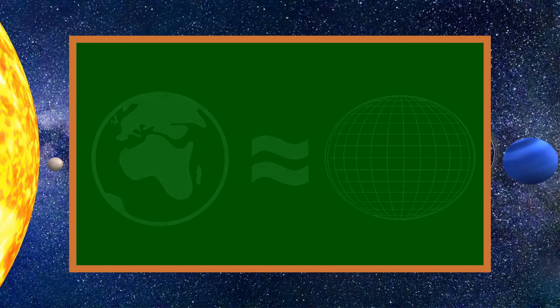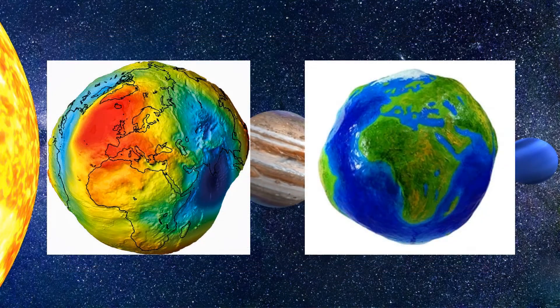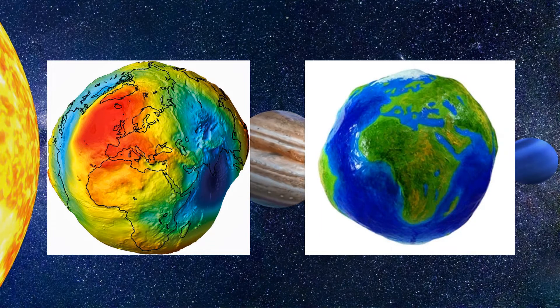The shape of the Earth is similar to an ellipsoid, but due to its deviation from the correct geometric shape, the shape of the Earth is said to be a geoid.